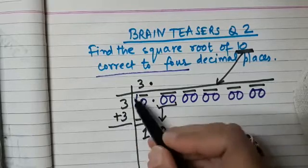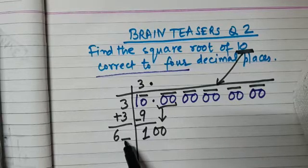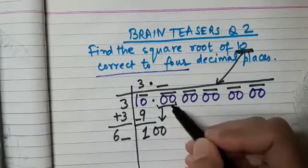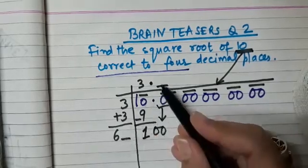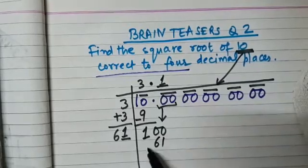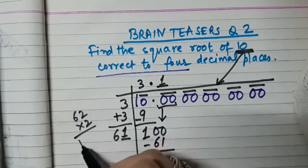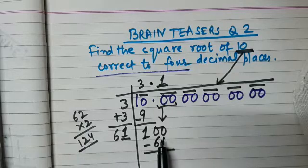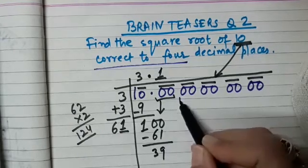What will be the next divisor? We write 3 plus 3, that is 6, and we need to think of a digit here which makes this a two-digit number, to be multiplied by the same digit we put in the quotient, such that the product is less than 100. We see 61 × 1 = 61, because 62 × 2 = 124 which is more than 100. So 61 × 1 = 61, and 100 minus 61 is 39.